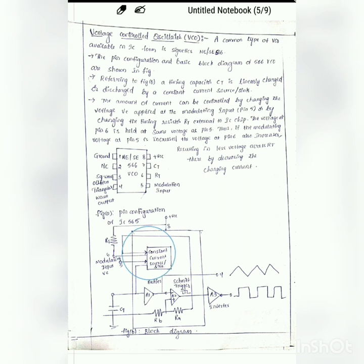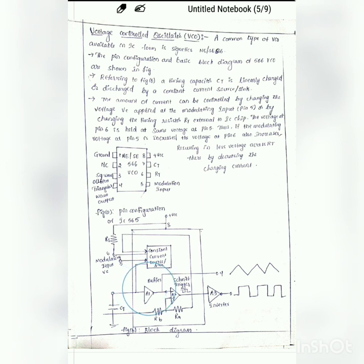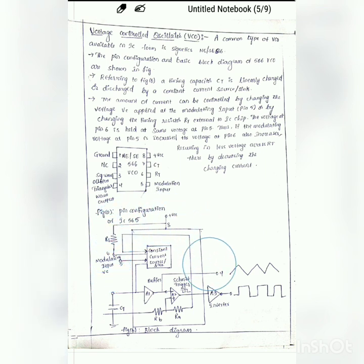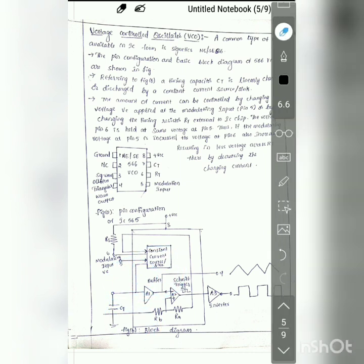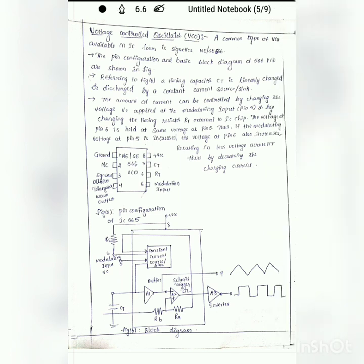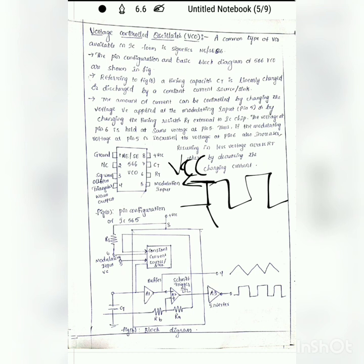The block diagram mainly consists of a constant current source or current sink, a buffer, a Schmitt trigger, and an inverter. There are also resistors RA and RB, a timing capacitor CT, a modulating input, and a timing resistor RT at pin 6. This is the block diagram of IC 566, the VCO.